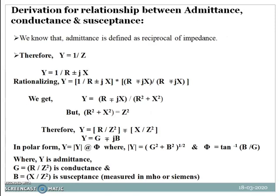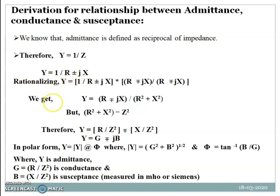Now let's understand the derivation for the relationship between admittance, conductance, and susceptance. Since admittance is the reciprocal of impedance, we write Y equals 1 by Z. Since Z equals R plus or minus jX, we write Y equals 1 divided by R plus or minus jX. To simplify, we rationalize by multiplying numerator and denominator by R minus or plus jX.